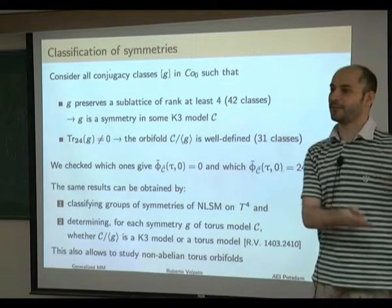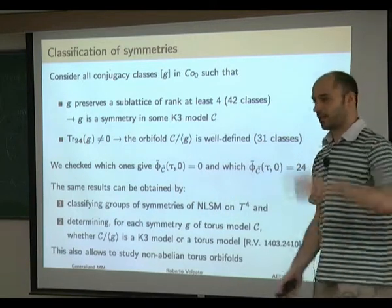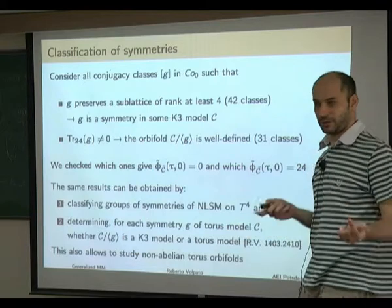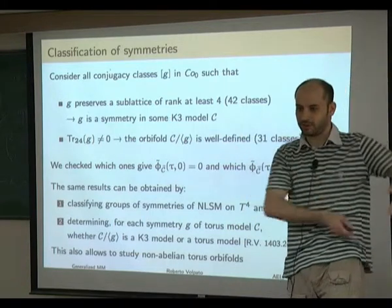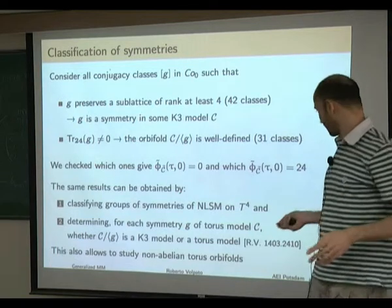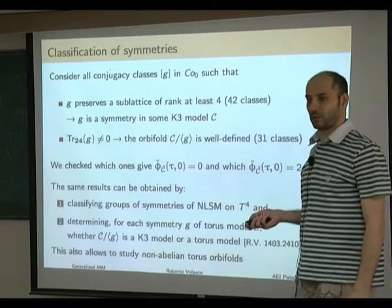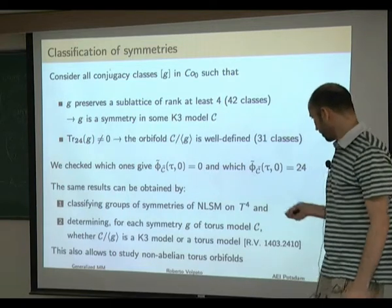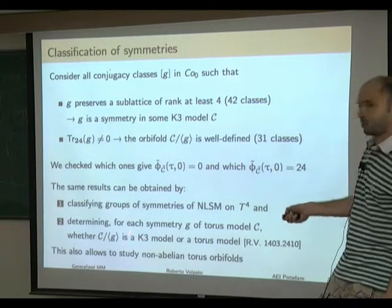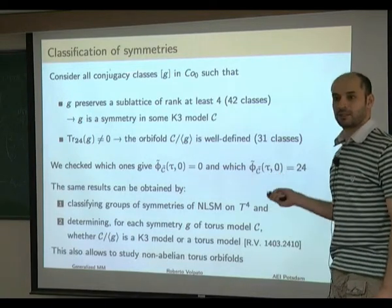Let me stress that one could also take a different approach: start from torus models, classify the group of symmetries of these T4 models, take all possible orbifolds, and check if they are K3 or T4. I did this exercise and obtained results that match perfectly with the analysis from the K3 model perspective. This analysis also fixed the only undetermined case.